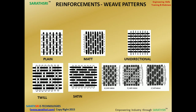Fiber weave patterns such as plain weave, where fibers alternate over and under each other, and satin weave, where alternate layers are arranged separately, are used to provide directional properties and better balance and strength to the lamina. These patterns allow tailoring of properties in specific directions.